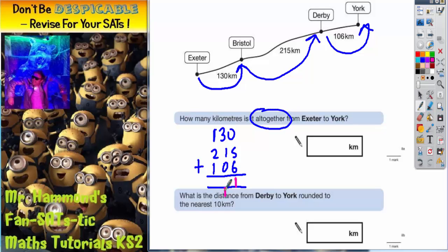Carry your 1. 3 plus 1 is 4. Plus 0 is still 4. Plus that one we carried was 5. Nothing to carry there.